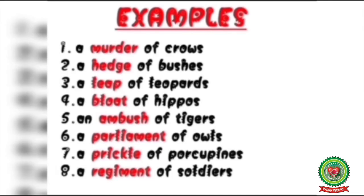Look at these examples. A murder of crows — murder means a group of crows. A hedge of bushes — hedge means a group of bushes. A leap of leopards — leap is a group of leopards. A blot of hippos — blot means a group of hippos. An ambush of tigers — ambush means a group of tigers. A parliament of owls — parliament means a group of owls. A prickle of porcupines — prickle means a group of porcupines. A regiment of soldiers — regiment means a group of soldiers. All are Collective Nouns.